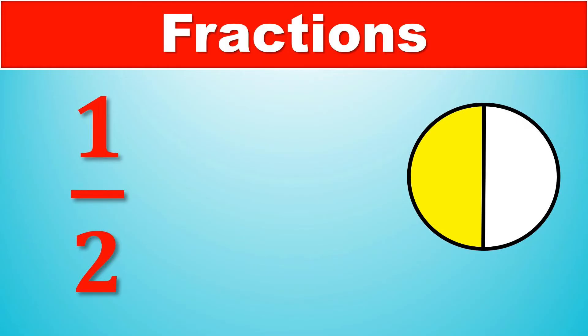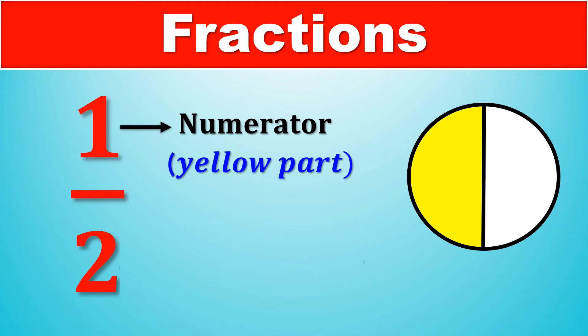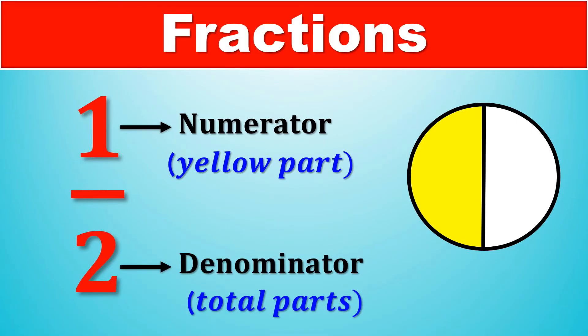The top number, one, is called the numerator and it is the yellow part, the shaded part in our circle. The bottom number, two, is the denominator, the total number of parts in our circle. So the total fraction of the yellow parts of our circle is one half.